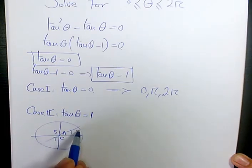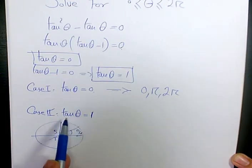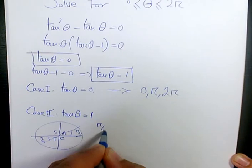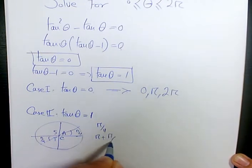So this one is pi over four. Based on the special angles, we know tan pi over four is one. And the second one is going to be pi plus pi over four, so pi over four and pi plus pi over four. That's going to be five pi over four.